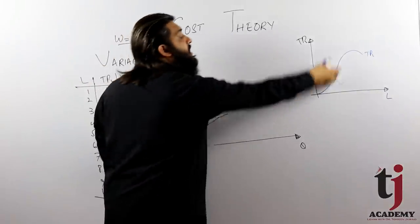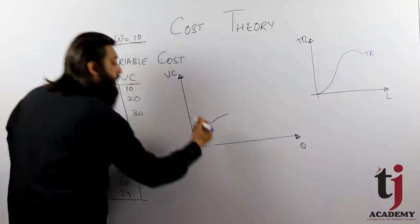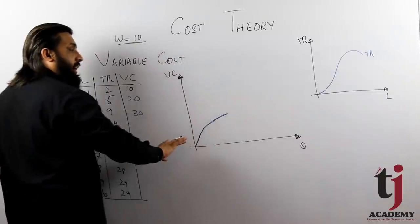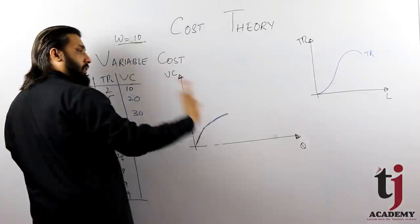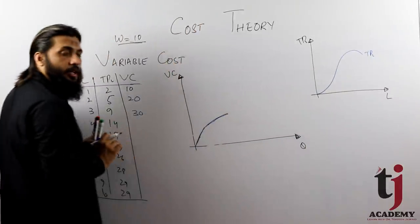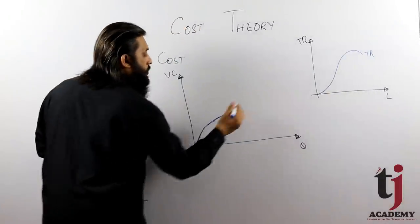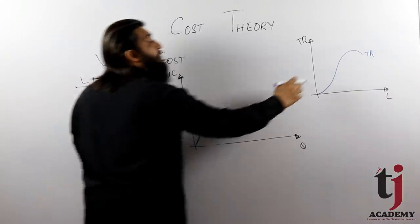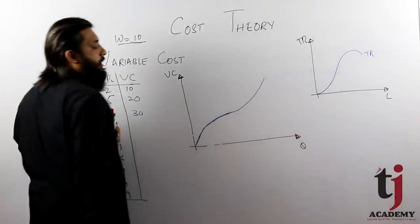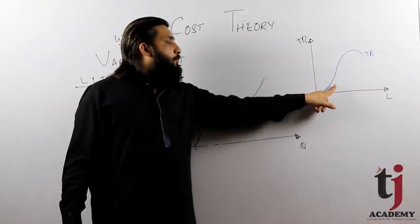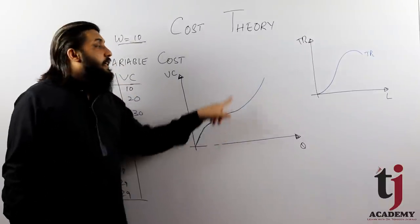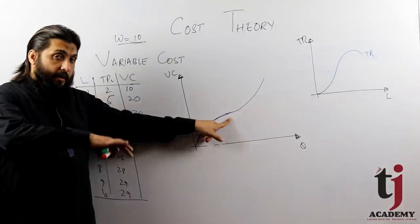The cost is increasing but at a decreasing rate. When productivity is increasing at an increasing rate, then cost is increasing with decreasing rate. When productivity rate is constant, cost rate is also constant. When productivity increases at decreasing rate, cost increases at increasing rate. So it's the reciprocal. In the beginning when you hire labor, productivity is increasing at increasing rate, so cost increases at decreasing rate.